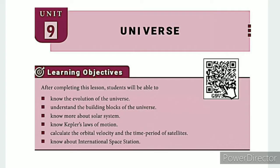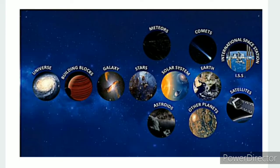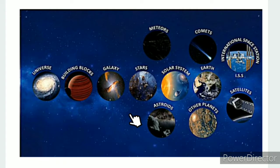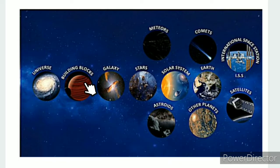The ICT corner link is in the description box. The concept map is a picture of the map. In this lesson there are a total of 6 topics. The first topic is the universe — what is the building block of the universe?